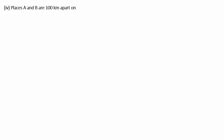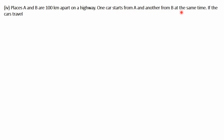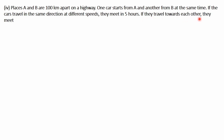Next question: places A and B are 100 km apart on a highway. One car starts from A and another from B at the same time. If the cars travel in the same direction at different speeds, they meet in 5 hours. If they travel towards each other, they meet in 1 hour. What are the speeds of the two cars? This question is a little bit complicated, so make sure each point is understood clearly.